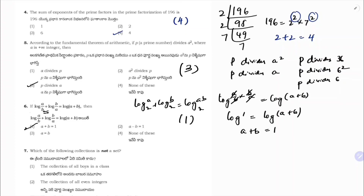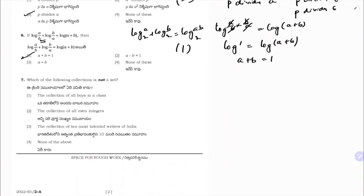Next: which of the following is not a set? The collection of all boys in a class — it is a set. The collection of all even integers (2, 4, 6, 8...) — also a set. The third option: collection of 10 most talented writers of India — it is not well defined, because 'talent' depends on unclear conditions. So correct option is 3.